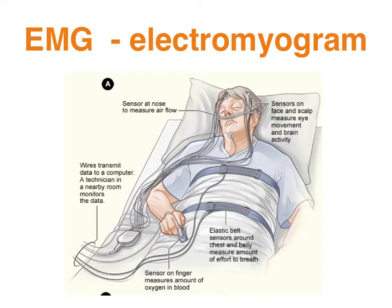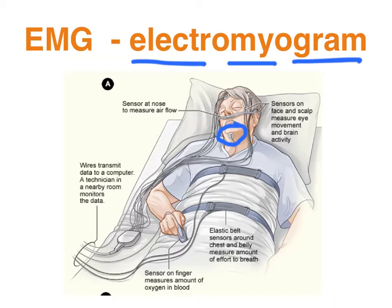An EMG — electromyogram — measures the electrical activity of the muscles. In a sleep study we attach electrodes to the chin to provide an indication of muscle tone or tension. An EMG can also be used in a normal waking consciousness, particularly to do with biofeedback — getting a measure of tension in the neck muscles, which is a cause of chronic migraines that might be experienced as a result of stress. The patient can learn to control and reduce that muscle tension by getting feedback from the EMG device as part of the biofeedback process.